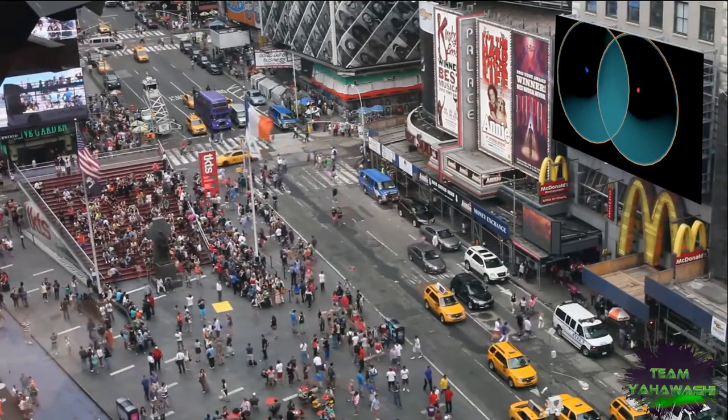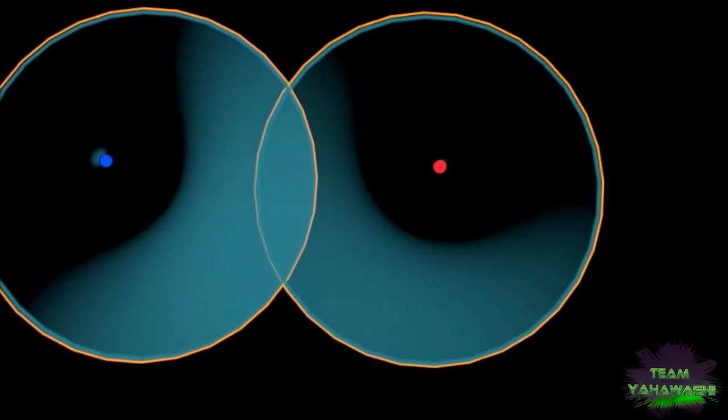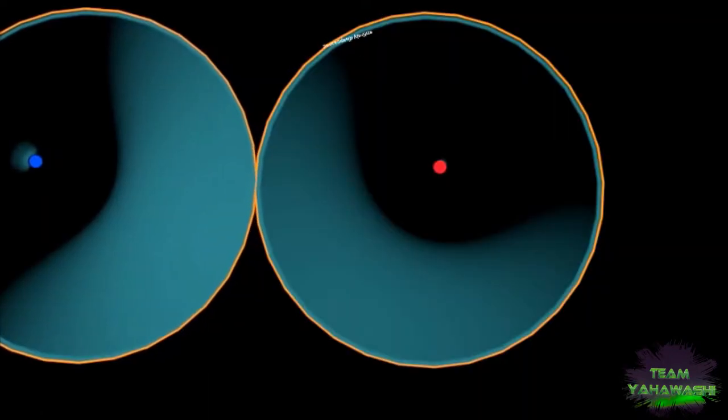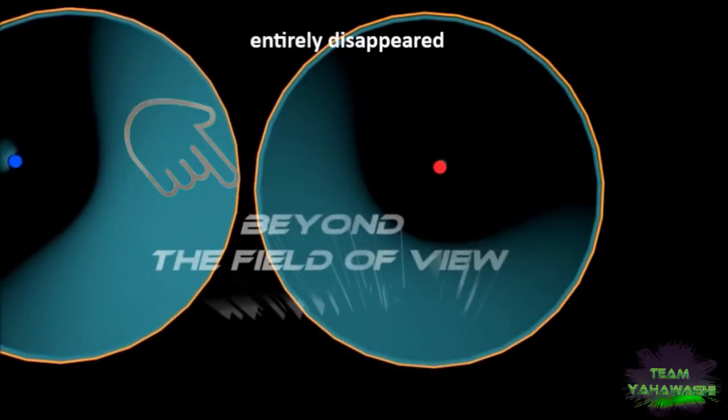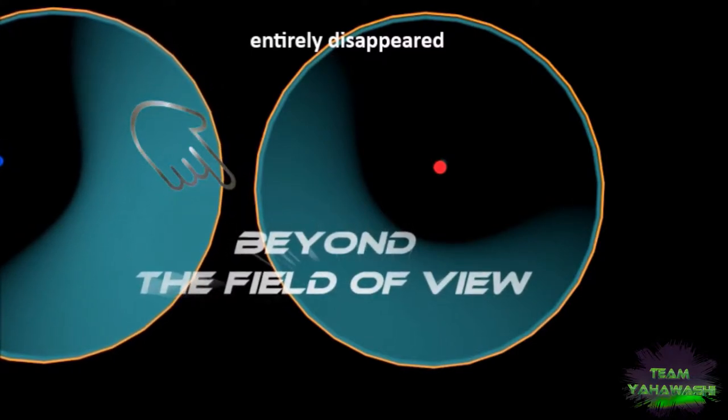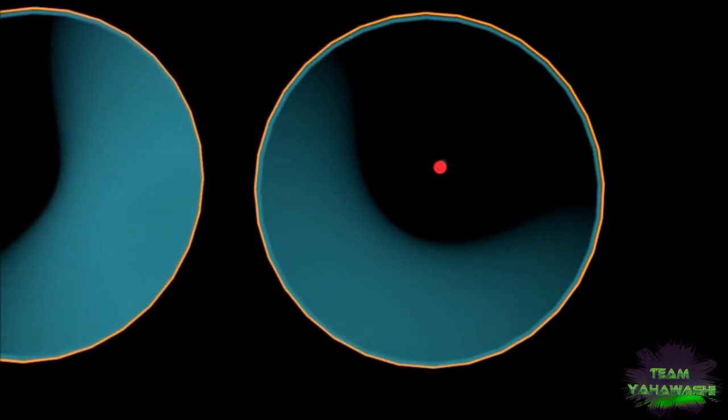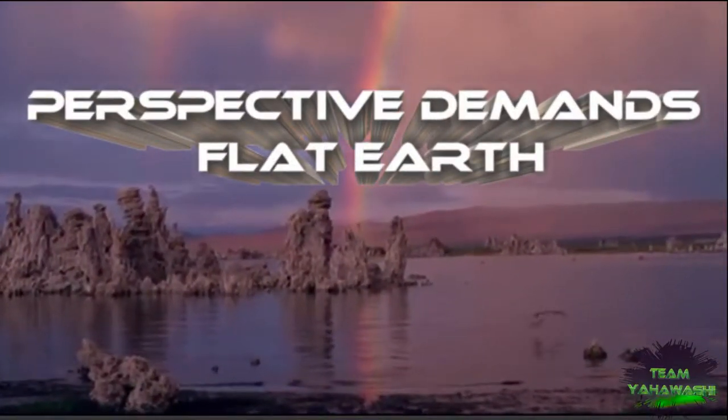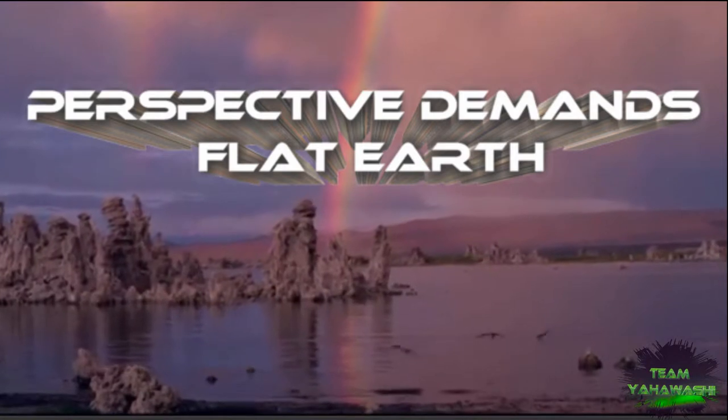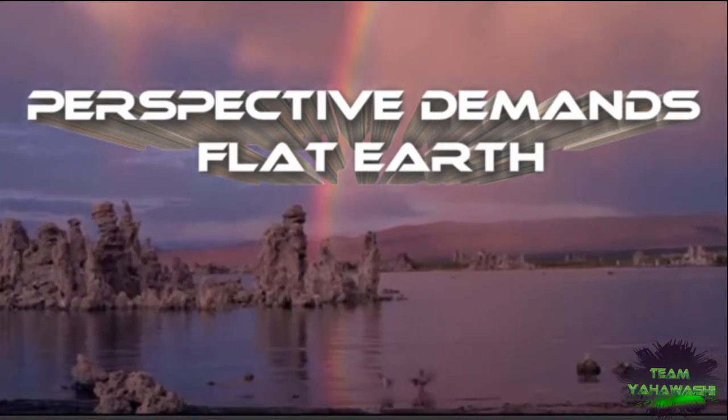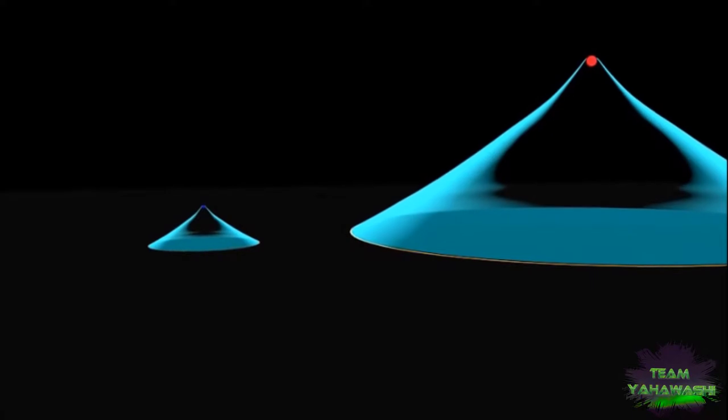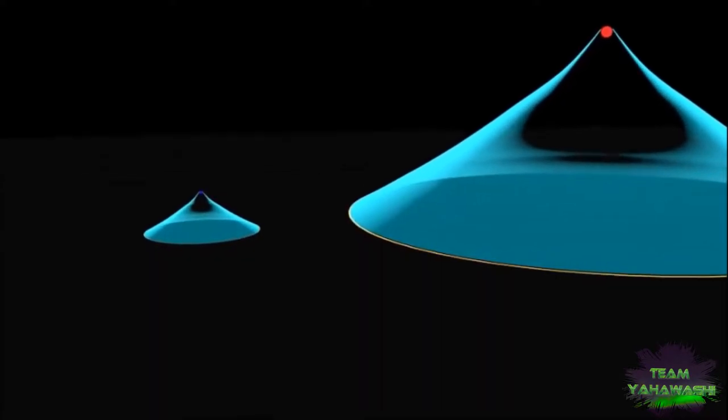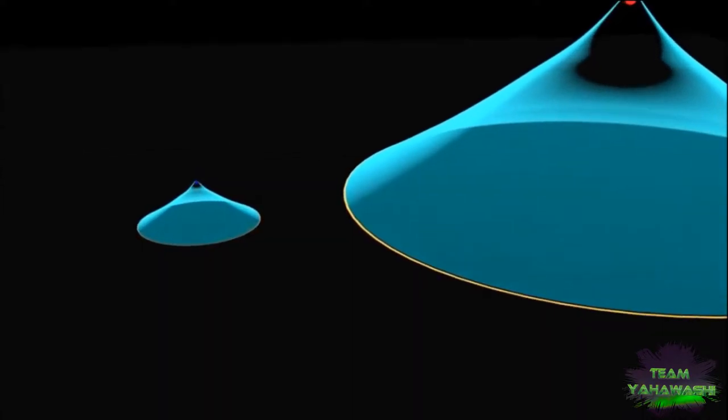As the blue object moves further away from the red, it then begins to set on the opposite horizon until finally it completely disappears beyond the field of view.